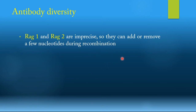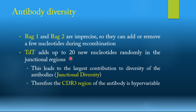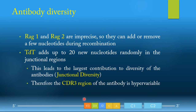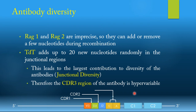The biggest contribution to diversity is actually achieved by TDT, because it adds up to 20 nucleotides randomly in the junctional regions between J and C. This addition is called junctional diversity. The area between J and C is what we call the CDR3 region, and CDR3 is actually the most variable — the most hypervariable — part of the antibody. Looking at the gene structure, the area between V and D will develop to become CDR1, the area between D and J is CDR2, while the area between J and C is CDR3, again the most hypervariable part of the antibody.